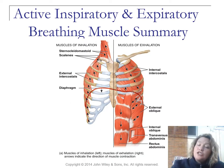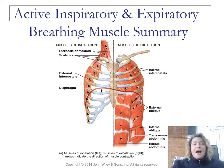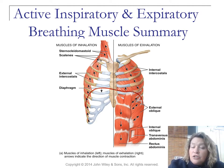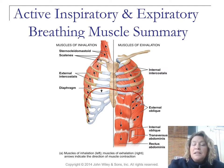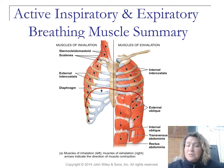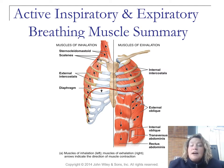These are some additional muscles because every once in a while we deep breathe. These extra muscles help with inhalation and exhalation. For inhalation, we have the sternocleidomastoid, the scalene muscles, the external intercostals, and of course the diaphragm. Muscles of exhalation include the internal intercostals, the external oblique, the internal oblique, the transversus abdominis, and the rectus abdominis. Almost every abdominal muscle participates during forced exhalation.